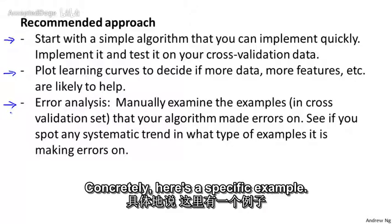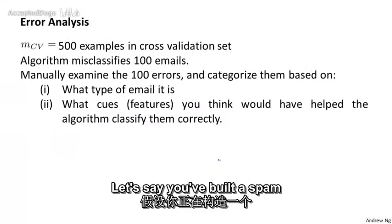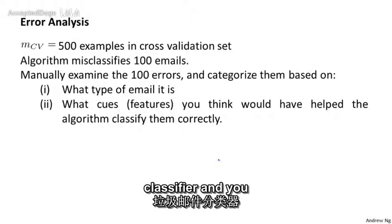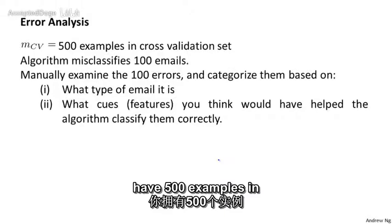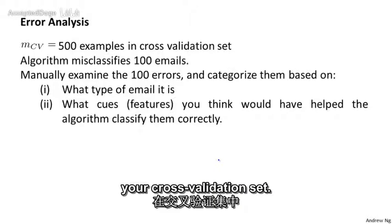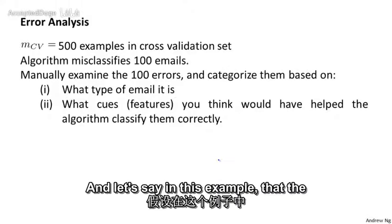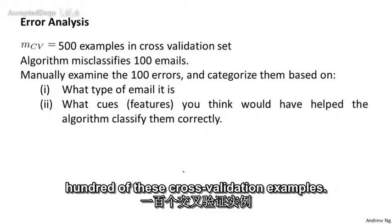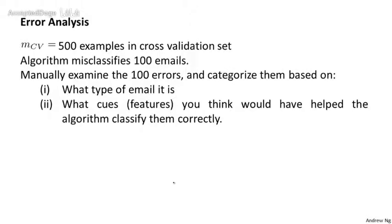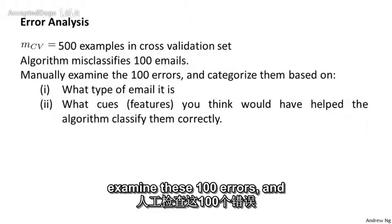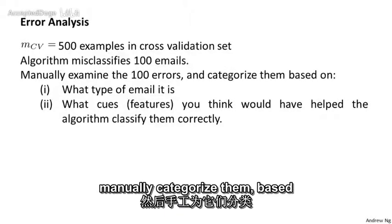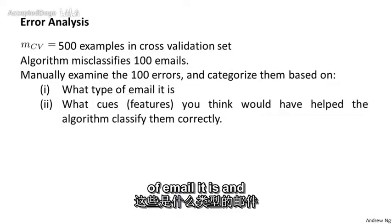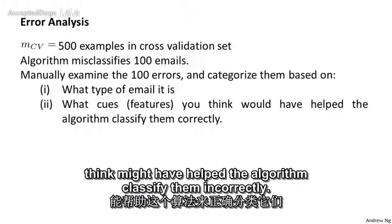Concretely, here's a specific example. Let's say you've built a spam classifier, and you have 500 examples in your cross-validation set. And let's say in this example that the algorithm has a very high error rate, and it misclassifies 100 of these cross-validation examples. So what I do is manually examine these 100 errors and manually categorize them, based on things like what type of email it is, and what cues or what features you think might have helped the algorithm classify them correctly.